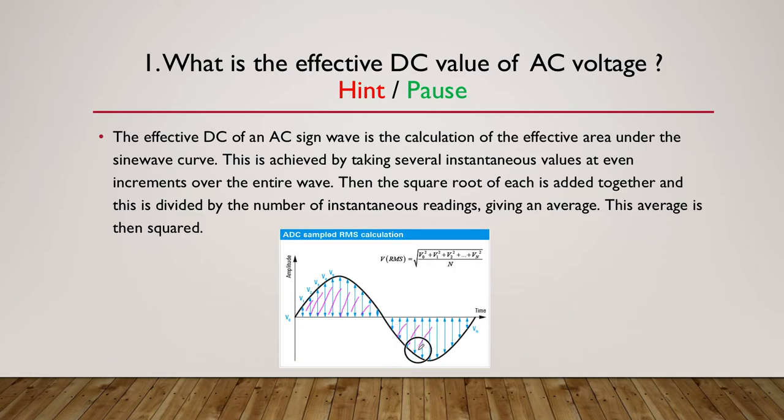So that's what we're talking about when we're talking about the area under the curve. I'm just quickly coloring that in. This is achieved by taking the instantaneous values at even increments over the entire wave, then we take the square root of each of those, we add them together and divide by the number of instantaneous readings, and then we take all of that and we then take the square root. We've taken all the instantaneous values, we squared them, we've added it together, then we've done an average, and then we've taken the square root of all of that. So that's your hint.